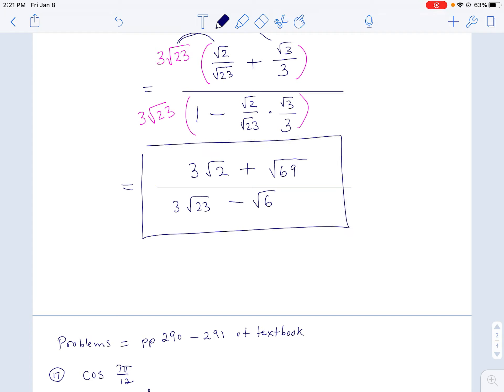So in the top, you get 3 root 2 plus root 69. On the bottom, you get 3 root 23 minus root 6.